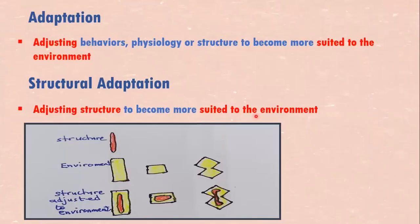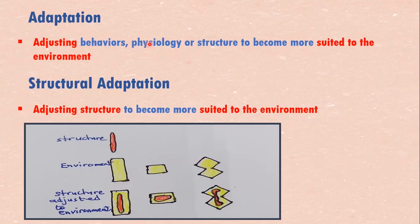First of all, we want to find out what the word adaptation means. Adaptation is adjusting behaviors, physiology, or structure to become suited to the environment. If changes have been going on in behavior, physiology — which is at the cell level, inside the cell — or structure, to become more suited to the environment, that is adaptation.